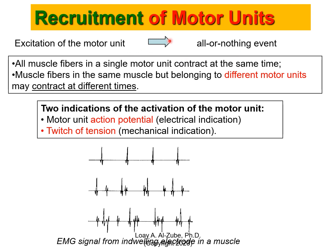How are the motor units recruited? We need to understand that when we look at the data, we need to link it clinically with something of value. Recruitment of motor units: you have excitation of the motor unit from the brain, through the spine, into the motor unit, which is connected to hundreds of fibers. If there is an action potential, it's all or none — all of them are activated or none. All muscle fibers in a single motor unit contract at the same time, but fibers in the same muscle belonging to different motor units may contract at different times.